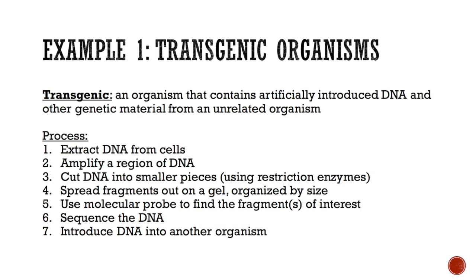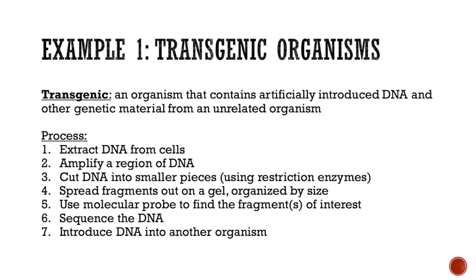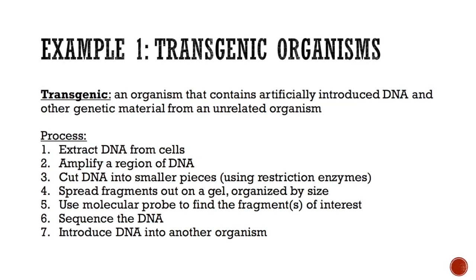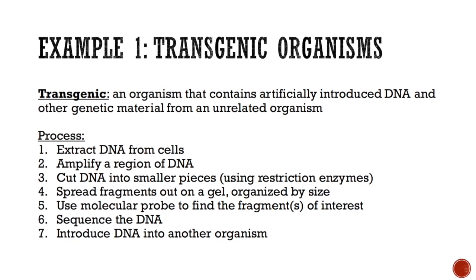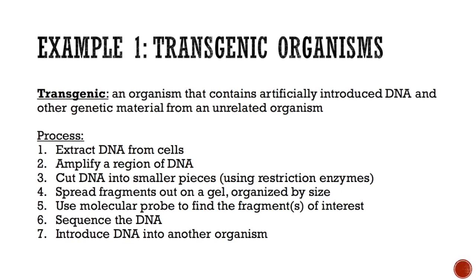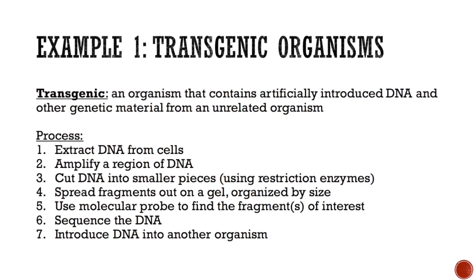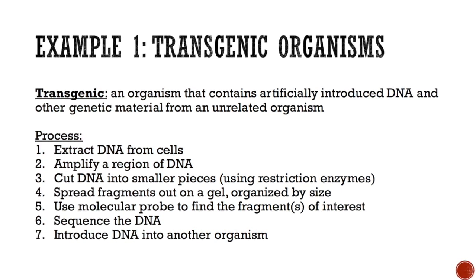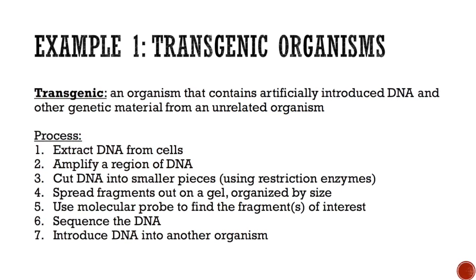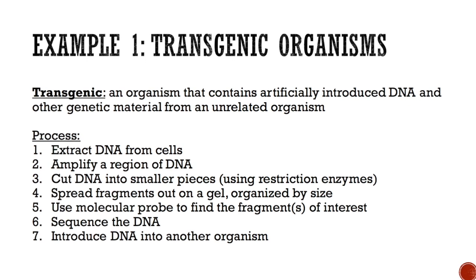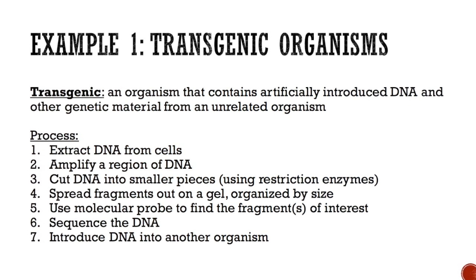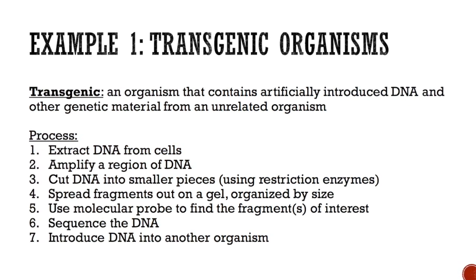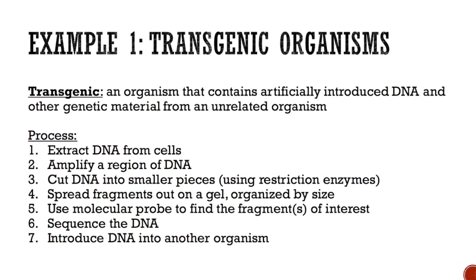Transgenic Organisms. A transgenic organism is an organism that contains artificially introduced DNA and other genetic material from an unrelated organism. To create a transgenic, you must go through a seven-step process that includes extracting DNA from cells,